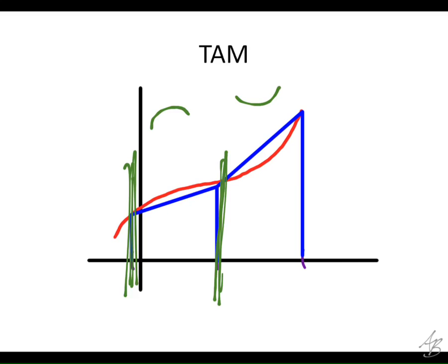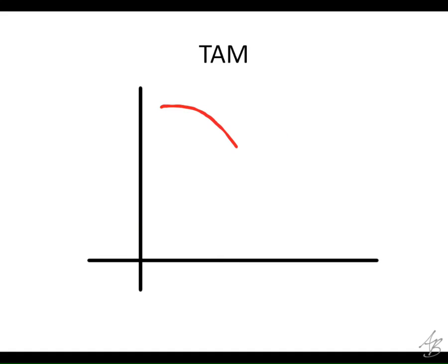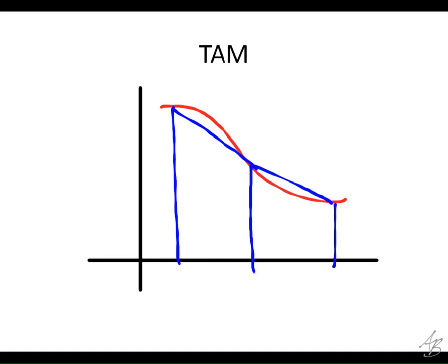When it's concave up, it's going to be an over approximation because the curve is underneath it. So for trapezoids, it doesn't matter if it's increasing or decreasing — all that matters is the concavity. Whether we have an increasing or decreasing function: where it's concave down, it's an under approximation; where it's concave up, it's an over approximation. Where rectangles use the increasing or decreasing characteristic of a graph, trapezoids use the concavity.